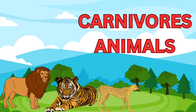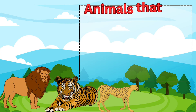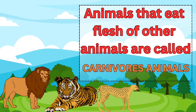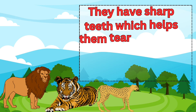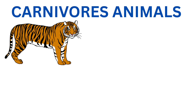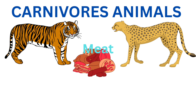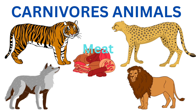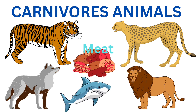Carnivore animals are animals that eat the flesh of other animals. They have sharp teeth which help them tear flesh into pieces and eat properly. Tiger, leopard, wolf, lion, and shark are a few examples of carnivore animals.